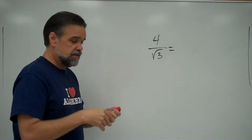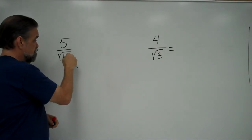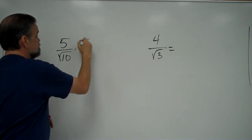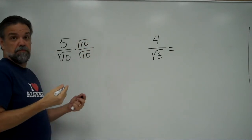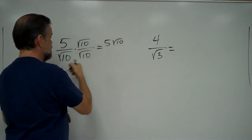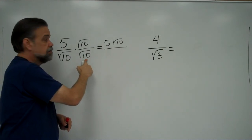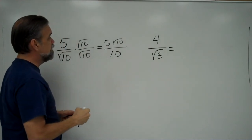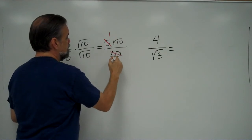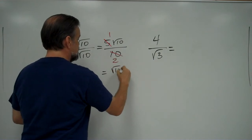Now, when you have a number like 5 over the square root of 10 and you want to get that irrational number out of the denominator, all you do is multiply by the square root of 10 over the square root of 10. In the numerator you get 5 times the square root of 10. In the denominator you get square root of 10 times square root of 10, which is 10. So you end up with 5 square root of 10 over 10, and the 5 and 10 are both divisible by 5, giving you square root of 10 divided by 2.